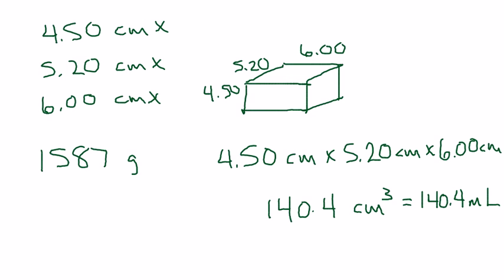To find the density, then, we'll use that same equation from earlier. Density equals mass over volume, and we'll say that D equals 1,587 grams divided by 140.4 milliliters. So, our density, then, should be 1,587 divided by 140.4, 11.3 grams per milliliter.